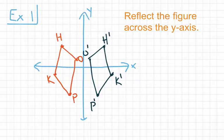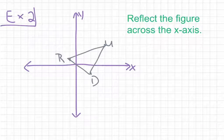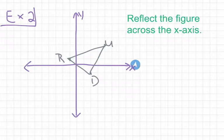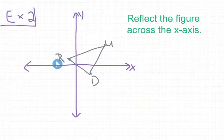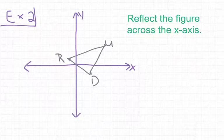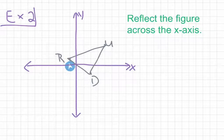For our second example, we have figure RUD, and the directions tell us to reflect the figure across the x-axis. We're reflecting the figure across this horizontal line. We notice that the figure actually already crosses over the x-axis — that's fine. We still want to count how far each point is away from the x-axis and mirror that distance to the other side.